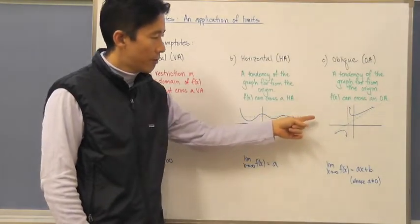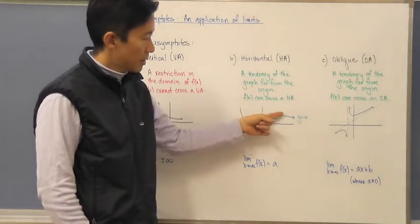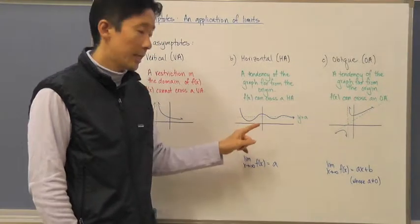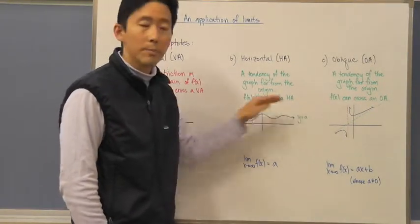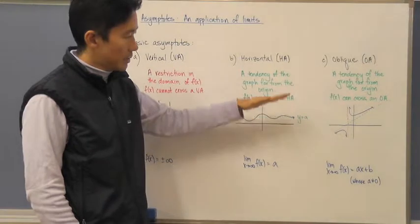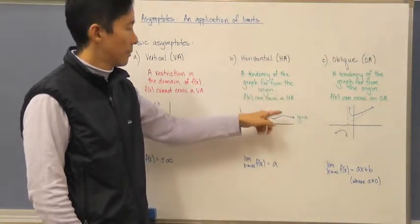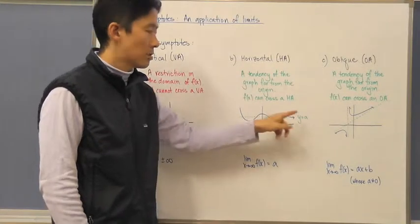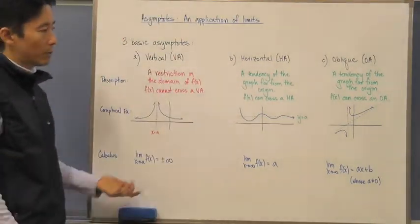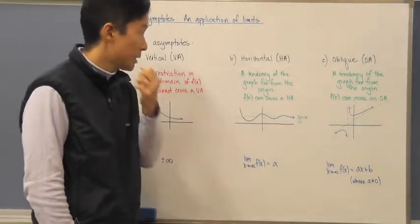As we get further and further from the origin, the function approaches closer and closer to the value a, and it seems as if it will almost always be there — though there may be a little up and down motion, the general tendency is toward a.